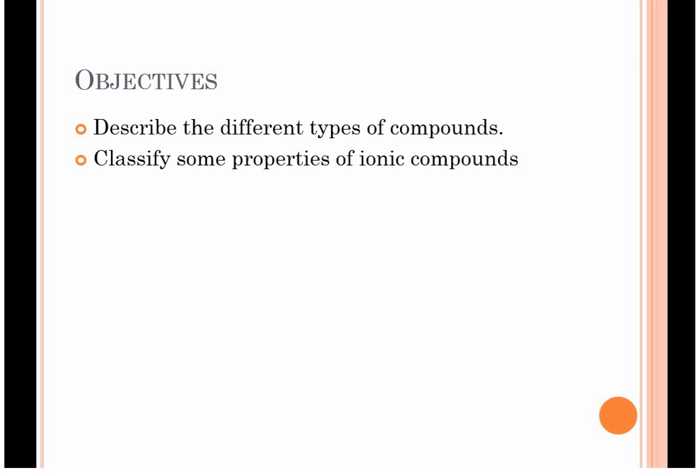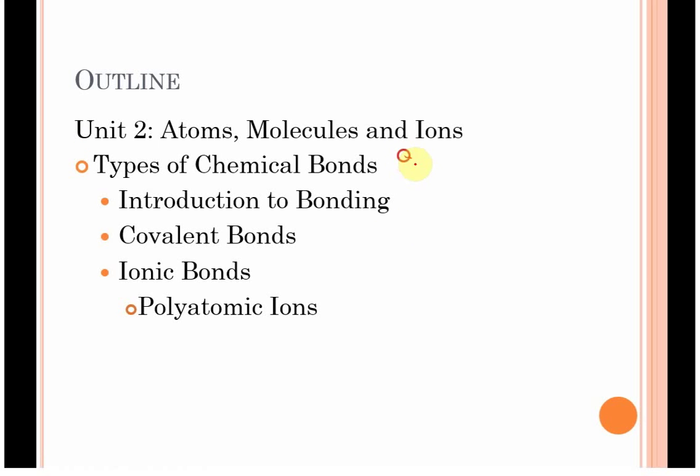So with that in mind, we're going to look at the different types of compounds and classify properties of ionic and covalent compounds. We're going to look at the different types of bonding. Now in this semester, we only deal with covalent and ionic bonding.